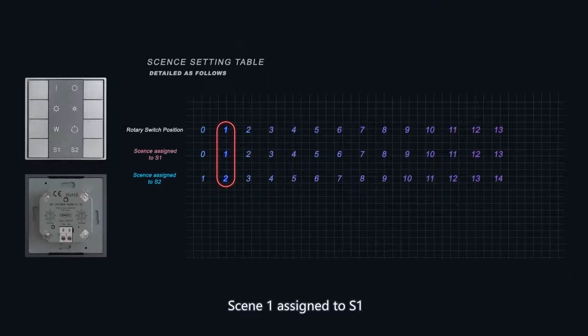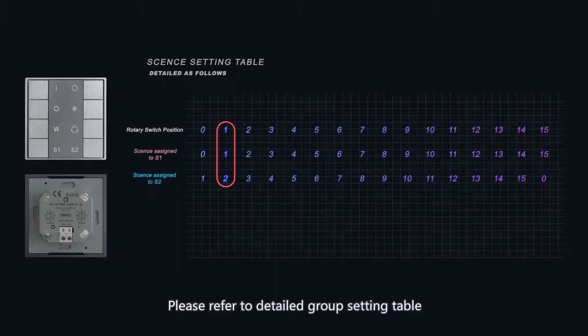When the Scene Rotary Switch is at position 1, Scene 1 is assigned to S1, and Scene 2 is assigned to S2. Please refer to the detailed group setting table.